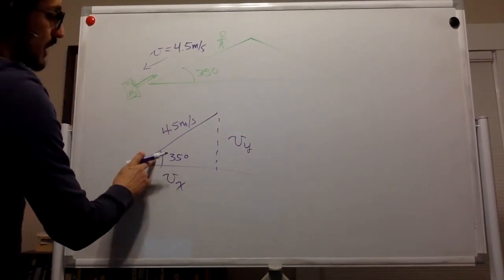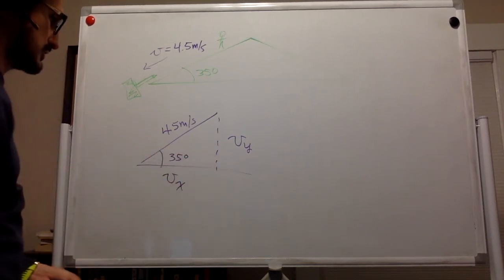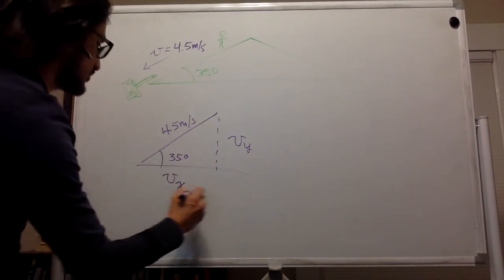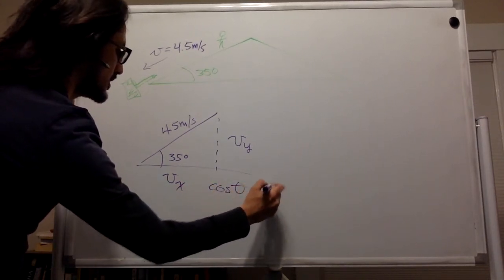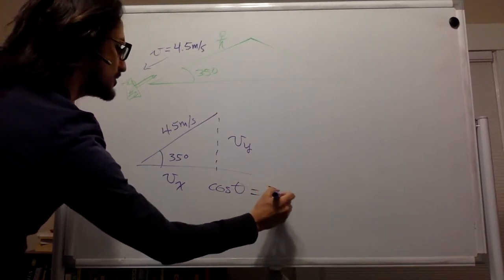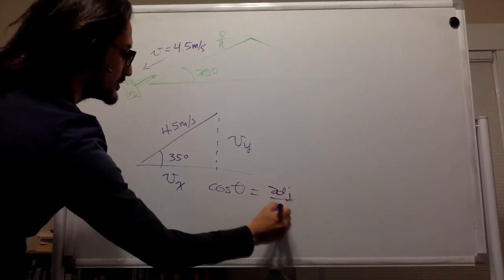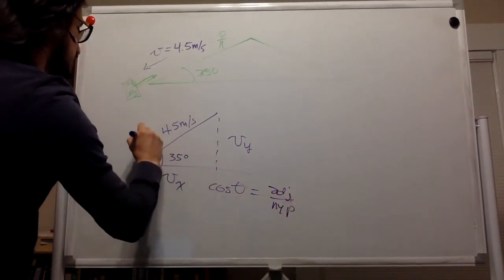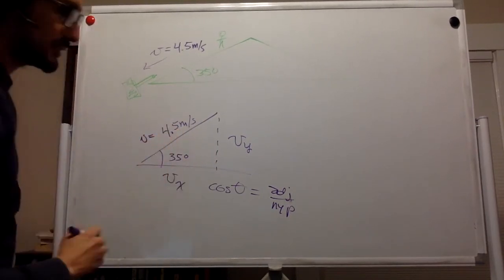So we have this angle and this is the adjacent side. So remember that cosine theta is adjacent over hypotenuse and we know the hypotenuse is 4.5 meters per second.